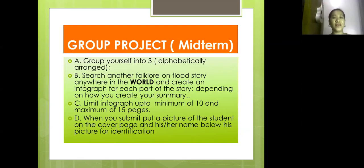This is the most exciting and most challenging part of my report today because it's a group project for midterm. I want you to group yourself into three groups, alphabetically arranged. If it's not alphabetically arranged, then choose your own preference. How are you going to arrange the group into three? And the second one, search another popular flood story anywhere in the world and create an infograph for each part of the story depending on how you create your summary.